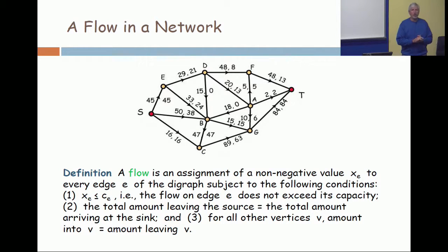62 units come into A. How much goes out of A? Look at the edges going out from A. I see a 15 and a 47. 15 plus 47 is 62. So the conservation law, amount in equals amount out, is satisfied at vertex B.